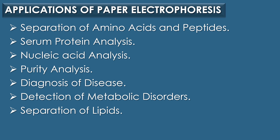Applications of paper electrophoresis — there are seven applications. The first is separation of amino acids and peptides: paper electrophoresis can separate amino acids based on their charge and size. The second is serum protein analysis: it is used to separate and analyze different proteins in blood serum such as albumin, globulin, and other fractions. This is particularly useful in clinical diagnostics for detecting abnormal protein levels.